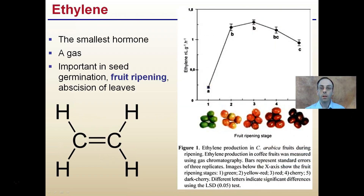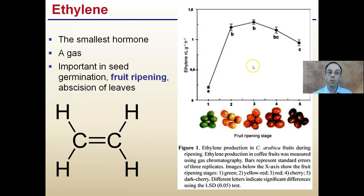So what is ethylene? It's the smallest hormone, it typically exists as a gas, and it's important for seed germination, fruit ripening, and abscission of leaves — and that means leaves basically fall off.